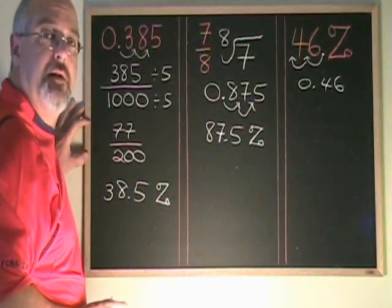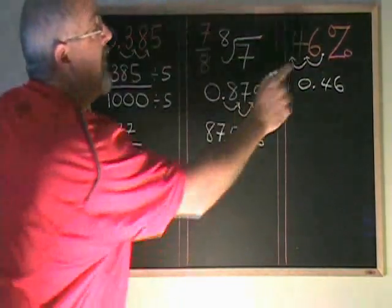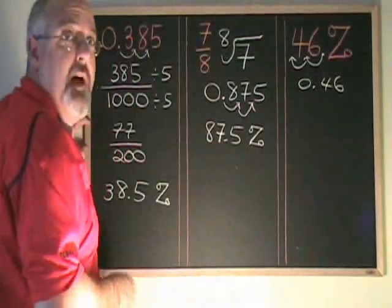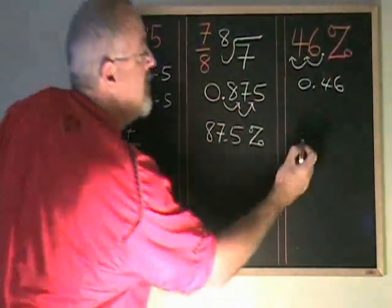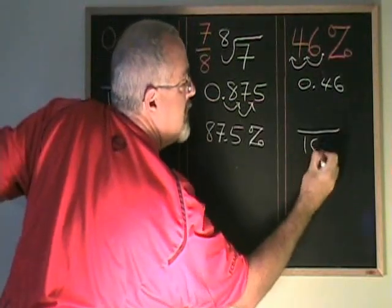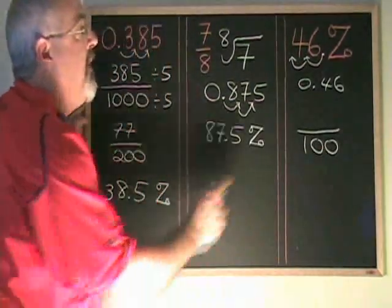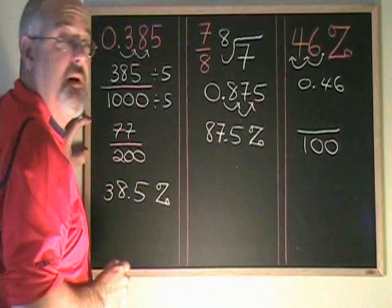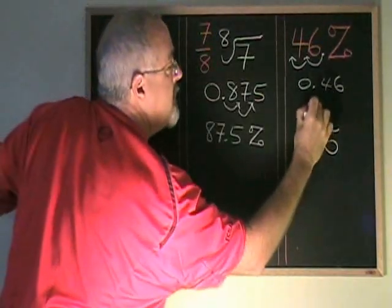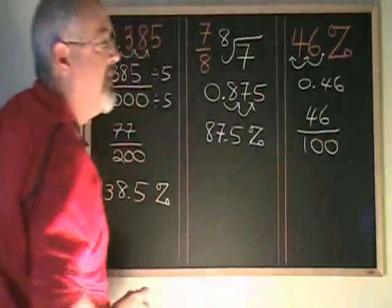To convert a percentage into a fraction is easy. Percent means out of a hundred. So what we do is we write a fraction with a hundred as the denominator and whatever we have as our percent goes in the numerator. 46 percent means 46 over a hundred.